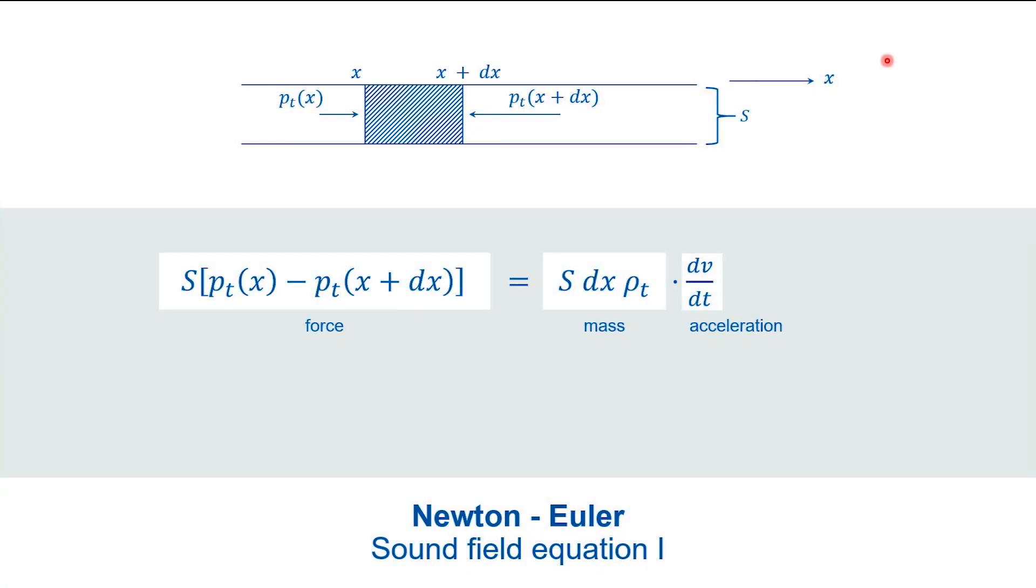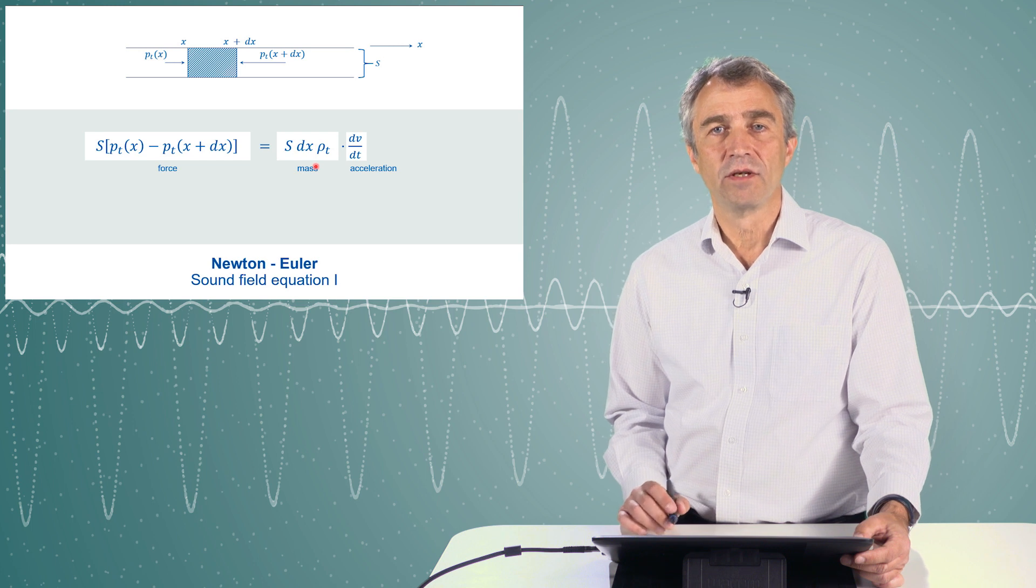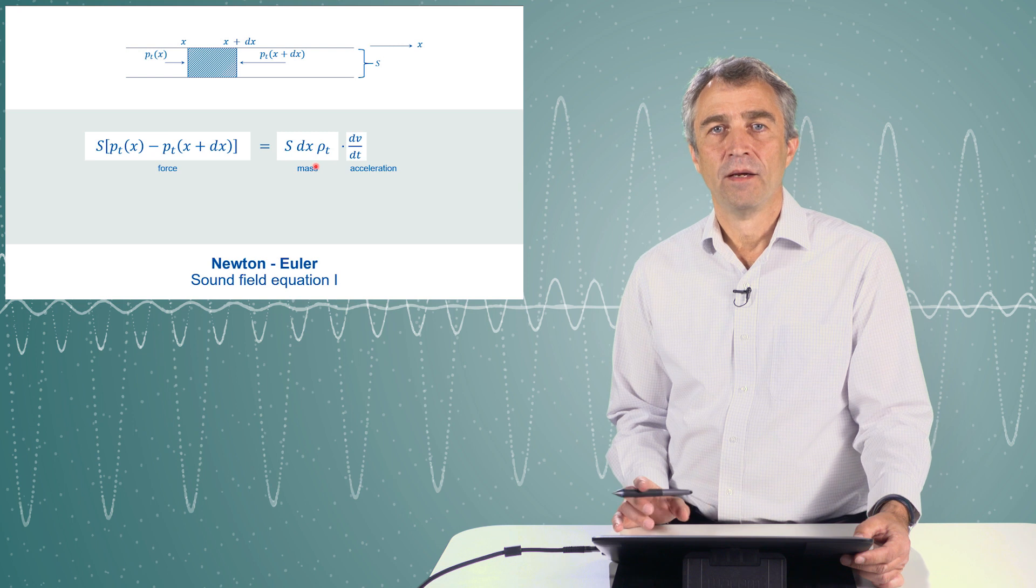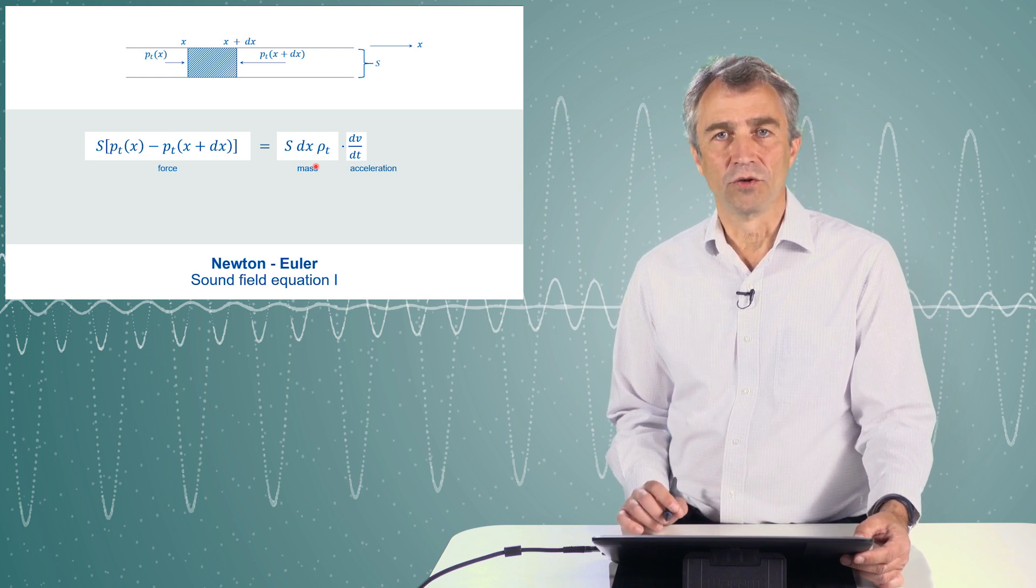So we have a difference determined on the left side by the term in the brackets, which is a pressure difference multiplied with the surface, we get a force. On the right side we see the term well-known mass times acceleration. The mass is nothing but the cross-section times the thickness of this little piece of medium times the density, and the acceleration is the derivative of the particle velocity.